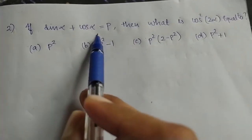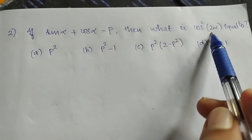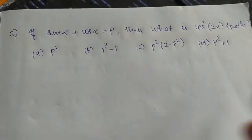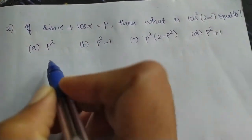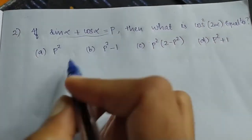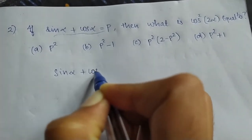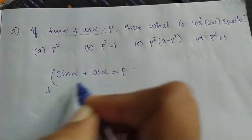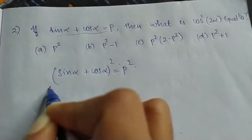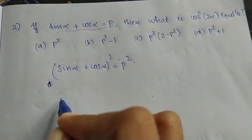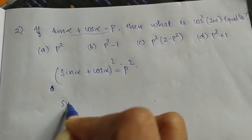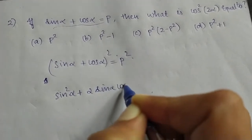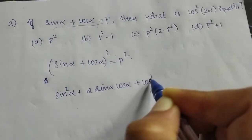If sin alpha plus cos alpha equals p, find cos 2 alpha in terms of p². We square both sides: sin alpha plus cos alpha squared equals p². Expanding using the (a+b)² formula: sin² alpha plus 2 sin alpha cos alpha plus cos² alpha equals p².